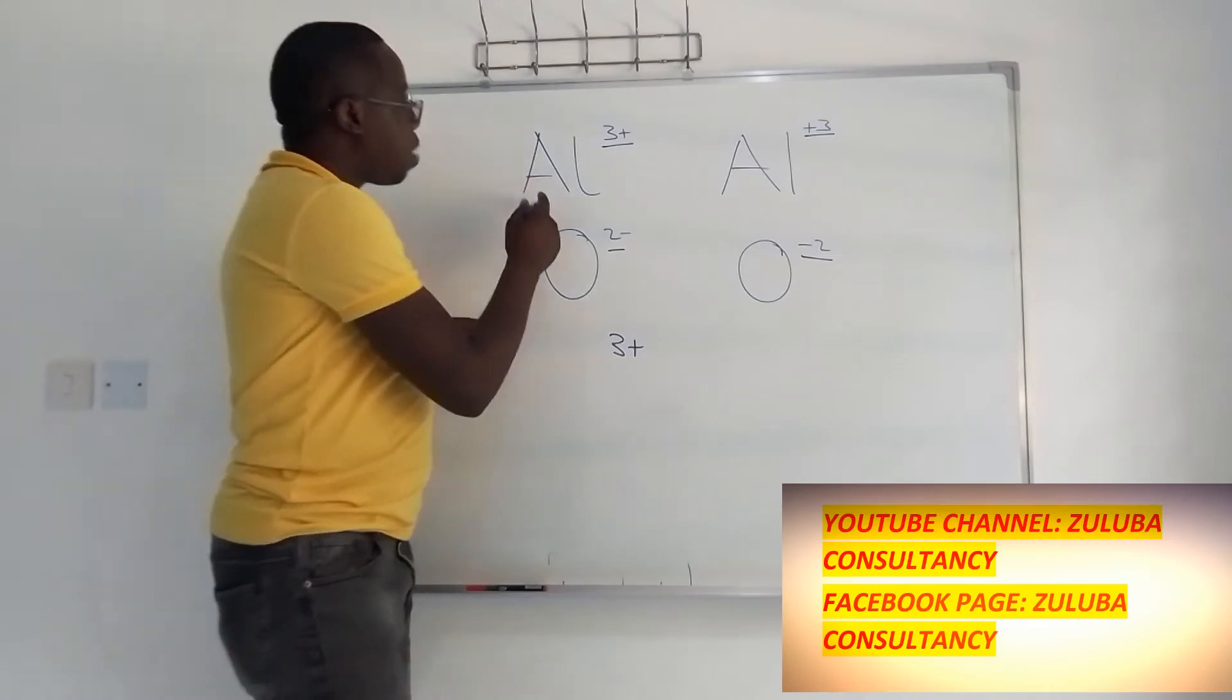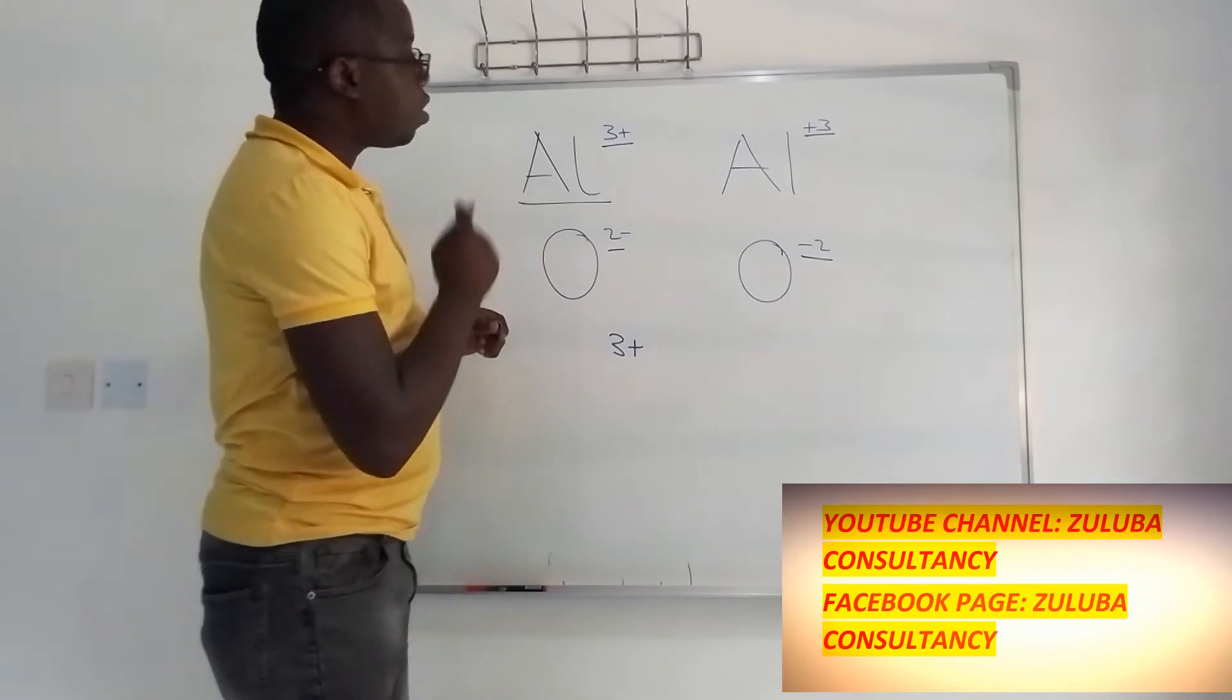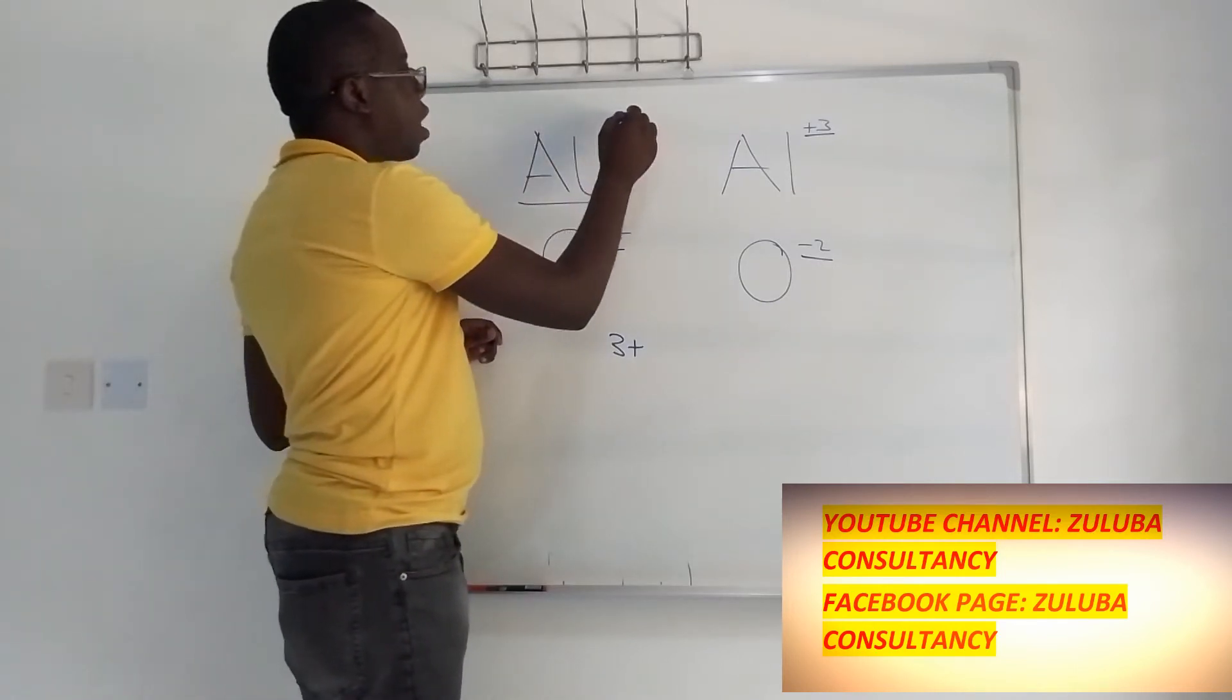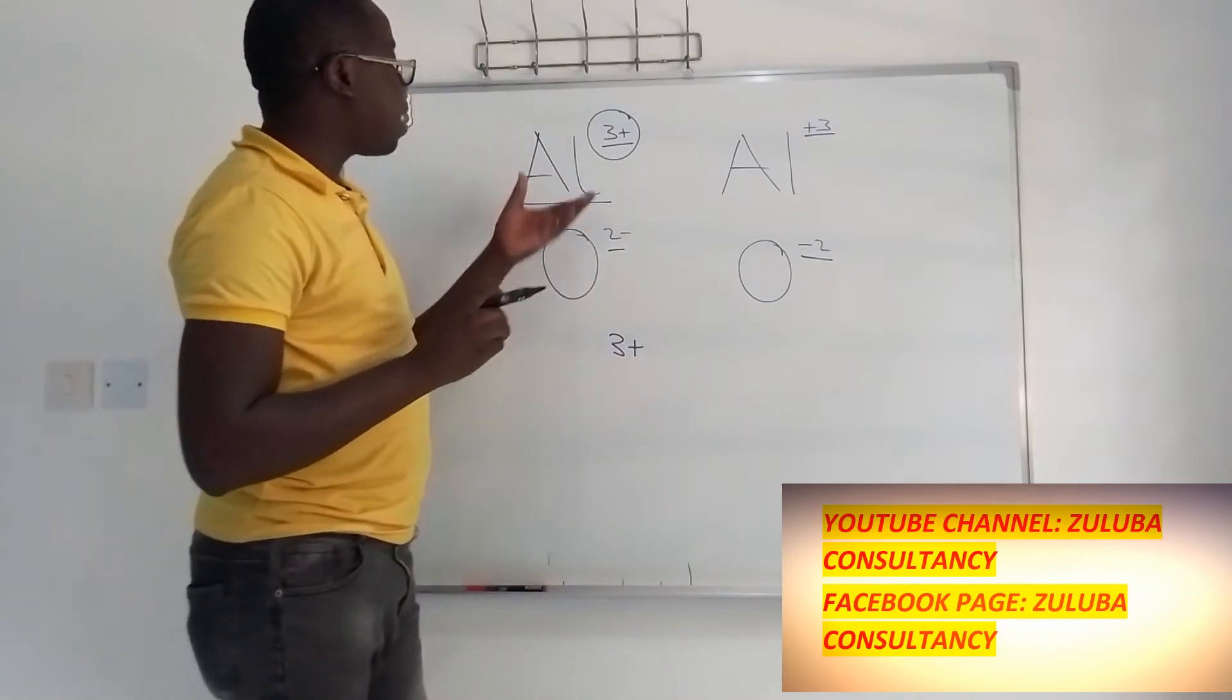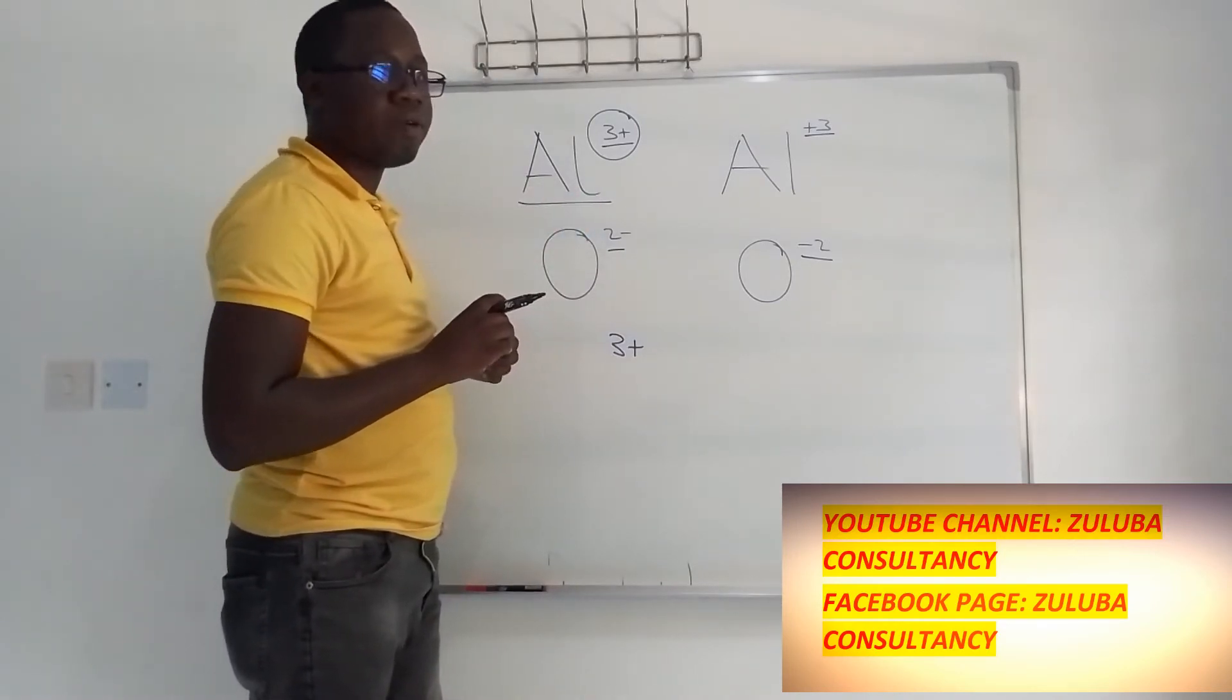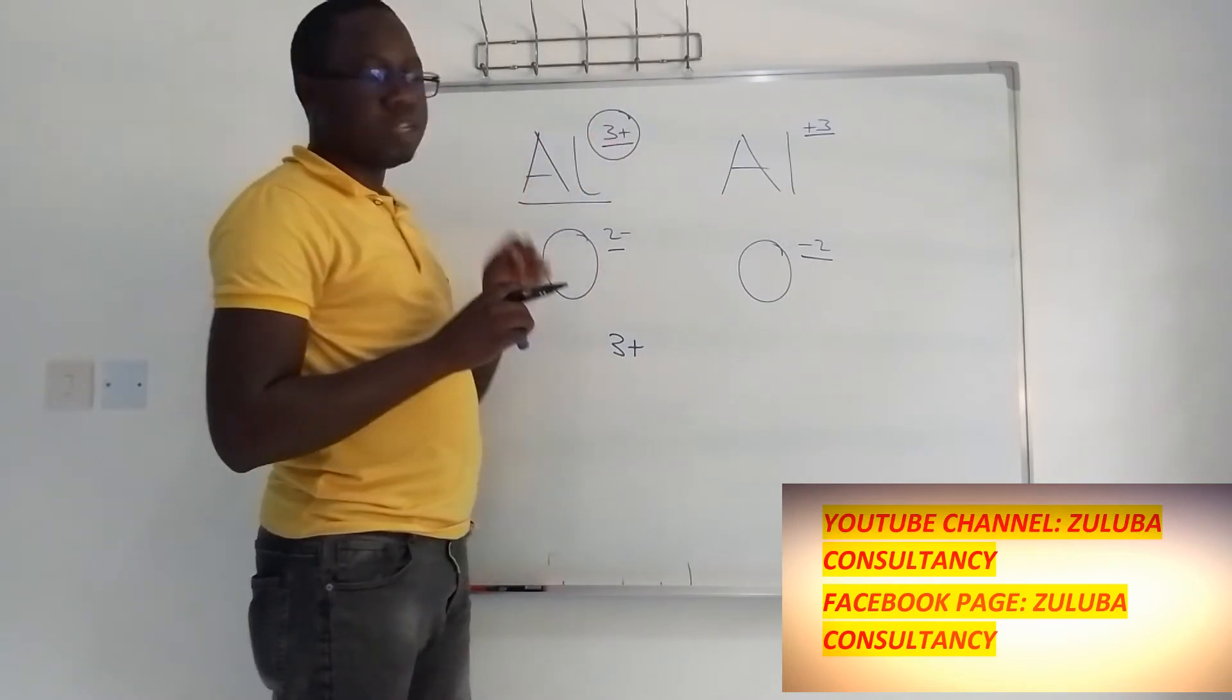In the example of aluminium here, this aluminium ion, this is simply telling us that three electrons were lost, that three electrons were lost by this aluminium ion. Hence it is becoming three positive.